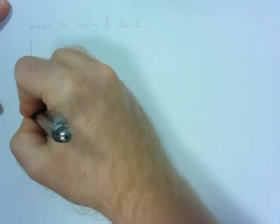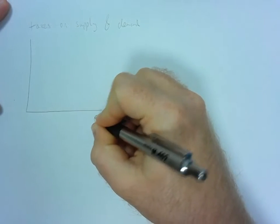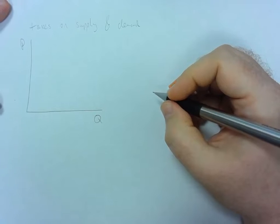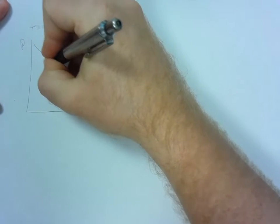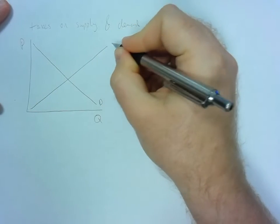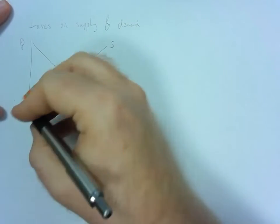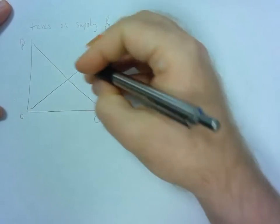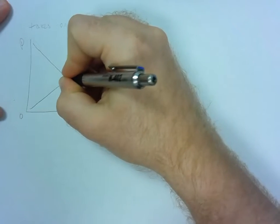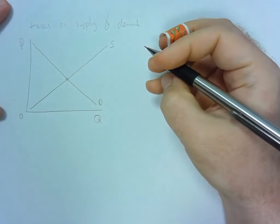So first what we're going to do is draw our standard supply and demand graph where we have quantity on the x-axis and price on the y-axis. We're going to draw our downward-sloping demand curve and our upward-sloping supply curve. We know that the origin is going to give us zero. We know where the cross is going to give us our equilibrium values.